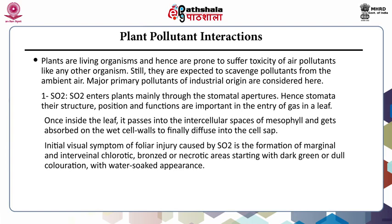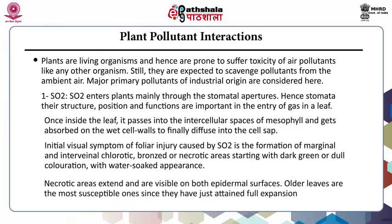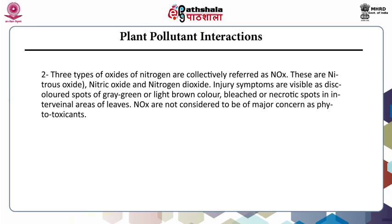Initial visual symptoms of foliar injury caused by sulfur dioxide include the formation of marginal and interveinal chlorotic, bronzed or necrotic areas, starting with dark green or dull coloration with a water-soaked appearance. Necrotic areas extend and are visible on both epidermal surfaces. Older leaves are the most susceptible since they have just attained full expansion. Next is NOx. Three types of oxides of nitrogen are collectively referred to as NOx: nitrous oxide, nitric oxide and nitrogen dioxide. Injury symptoms are visible as discolored spots of gray-green or light brown color, bleached or necrotic spots in interveinal areas of leaves.